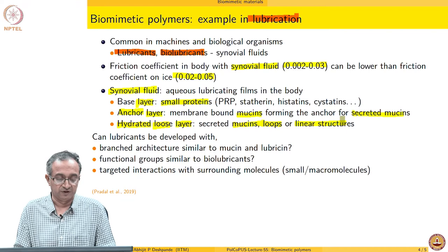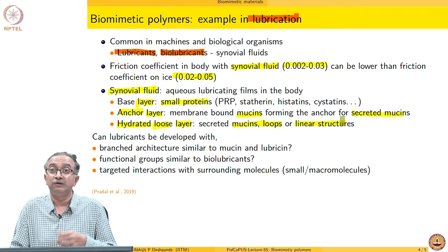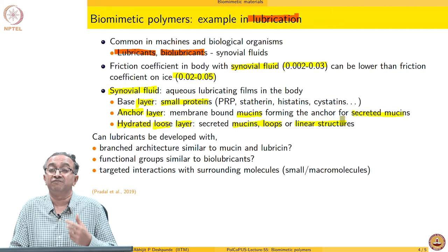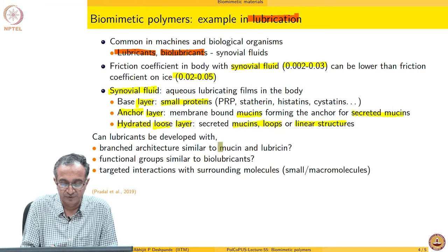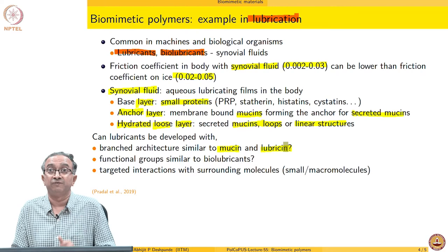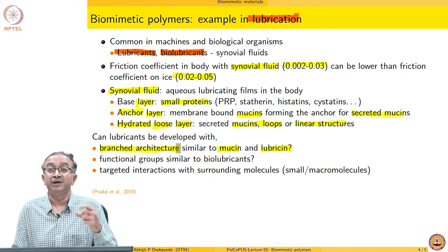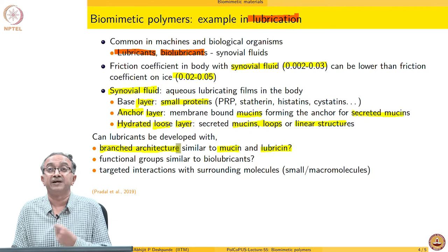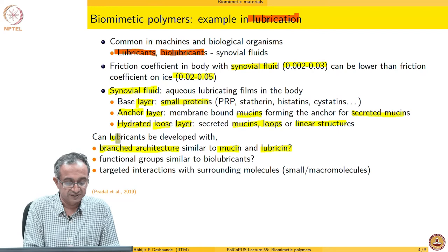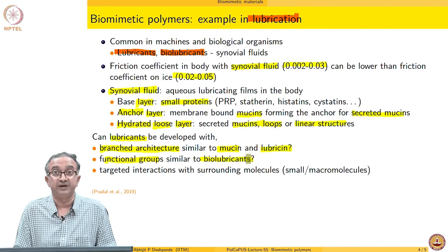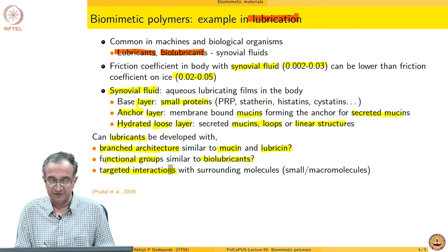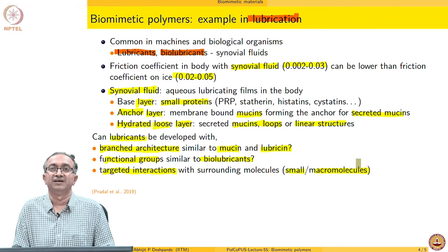There are small proteins in the base layer, and then there are mucins, which are the key determinant of synovial fluid properties. Mucins are present in both of these layers and they form loops or linear structures, which determines the overall lubricating properties of synovial fluid. When thinking in terms of biomimetic polymers, can we look at mucin and ask whether it gives us ideas about the design of macromolecular systems? For example, lubricin and mucin — commonly observed polymers in synovial fluid — are all branched. So branched architecture may be a very good property to have in macromolecular systems when searching for new lubricants. This is biomimetic thinking.